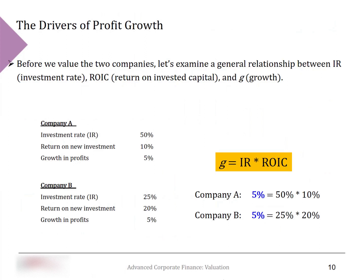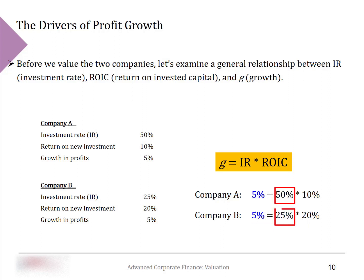Going back to the earlier example, Company A — with a return on capital half that of Company B — can achieve the same growth rate if it invests twice as much. In fact, Company A can even have a higher growth rate than Company B by investing more than 50% of its earnings. This tells us that higher growth per se cannot be value-increasing, since a company can always reach higher growth simply by investing more.